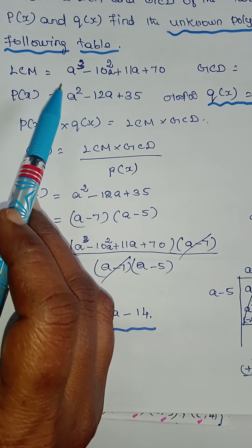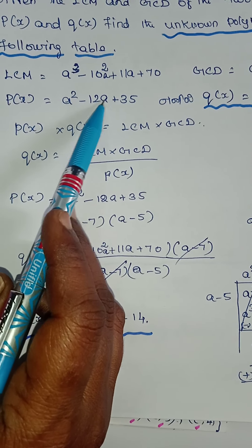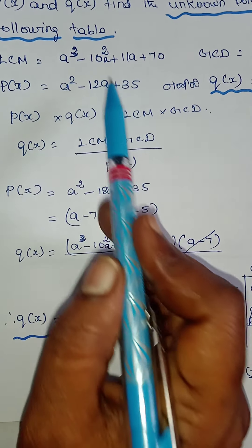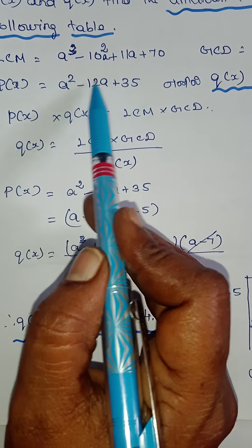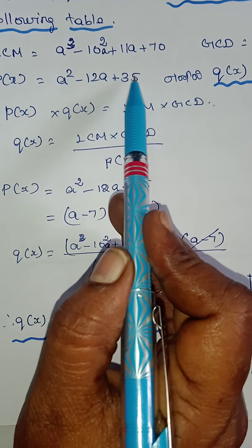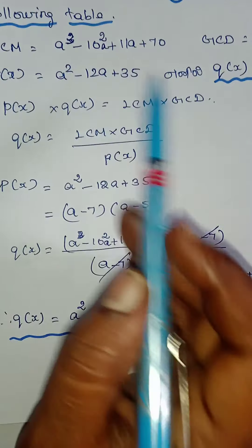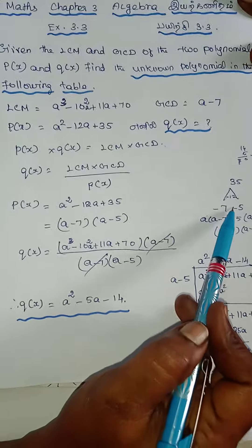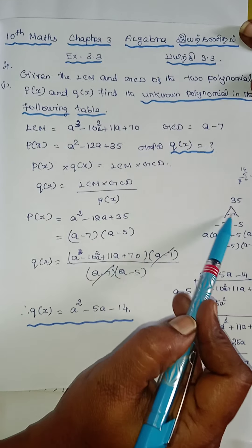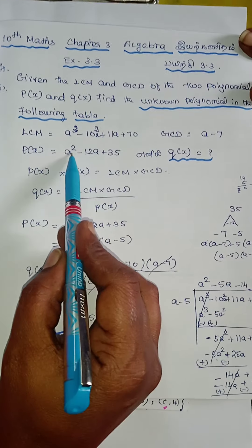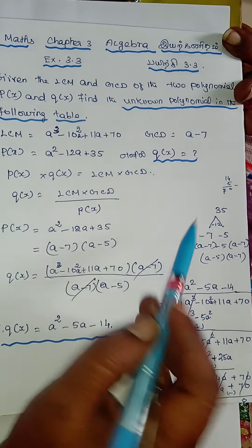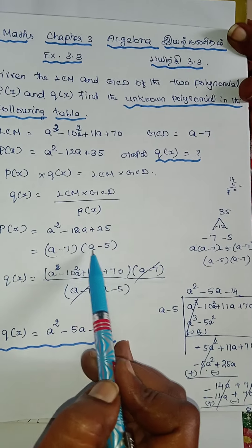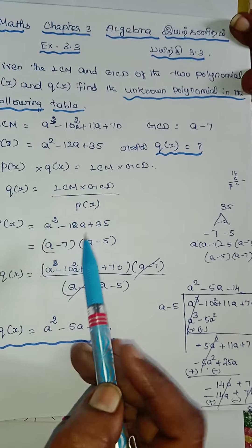Now P of X is a squared minus 12a plus 35. Let's take a look at how to multiply all these ones. Then a squared minus 12a plus 35 factors as (a minus 7)(a minus 5). This is P of X.